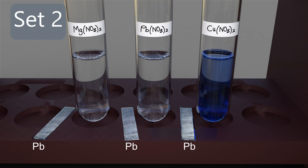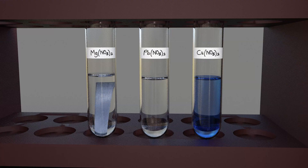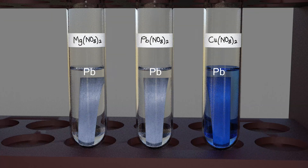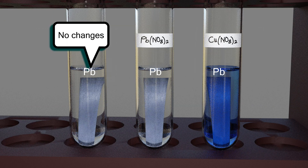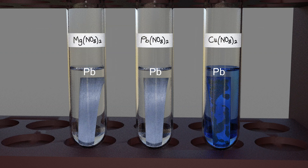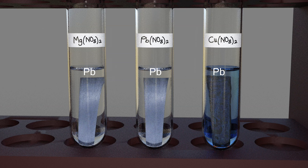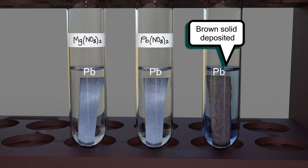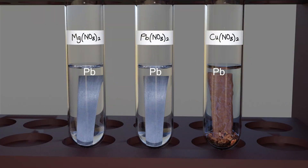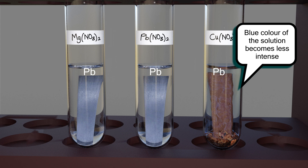Prepare three strips of lead and insert a lead strip into each of the three test tubes of set two, and observe. No changes can be seen in the test tubes containing magnesium nitrate solution and lead two nitrate solution. However, a brown deposit, which is copper metal, can be seen forming in the test tube containing copper two nitrate solution. At the end of the reaction, the blue color of the copper two nitrate solution becomes less intense.